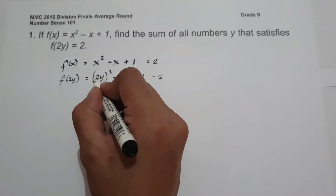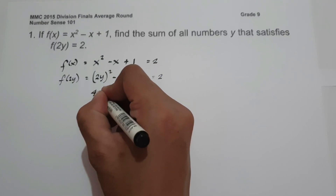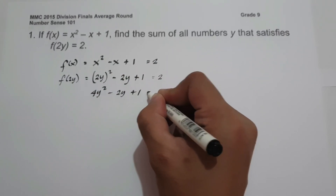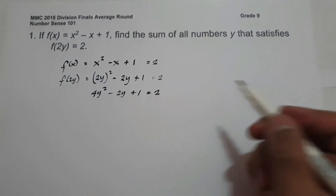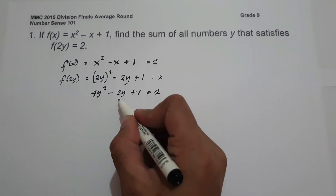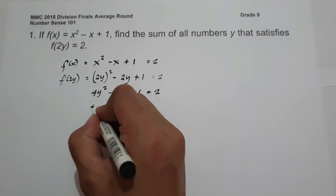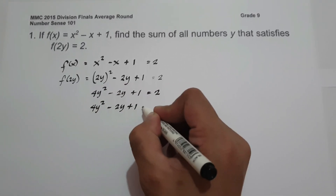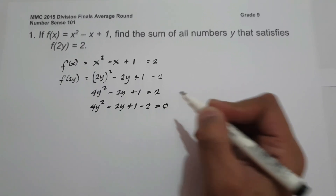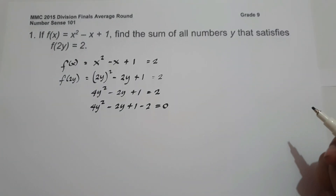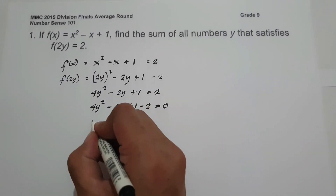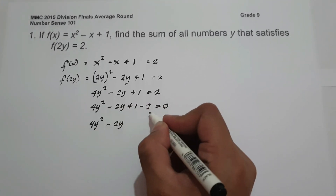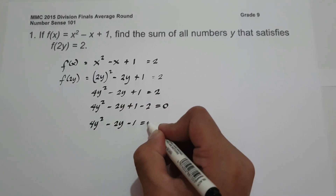Let us simplify. 2y squared gives us 4y squared minus 2y plus 1 equals 2. Moving 2 to the other side of the equation gives us 4y squared minus 2y plus 1 minus 2 equals 0, which simplifies to 4y squared minus 2y minus 1 equals 0.